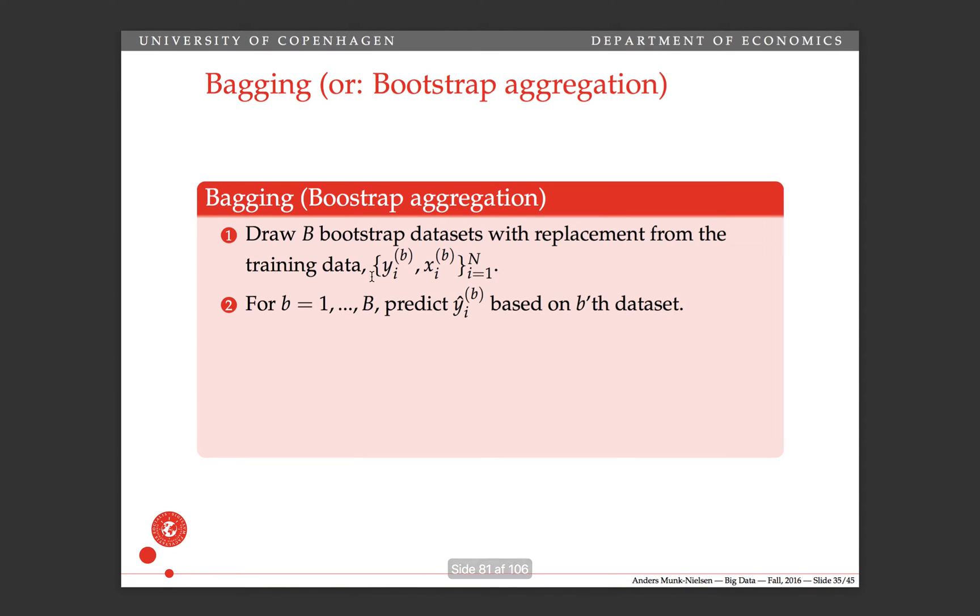Then on each of these bootstrap data sets, lowercase b, one to capital B, you predict Y hat b based on the b'th data set. So you estimate it, and then that gives you this prediction object function, or maybe it's estimated parameter values that you can evaluate at some x's.